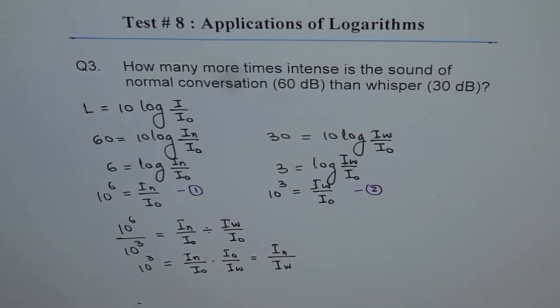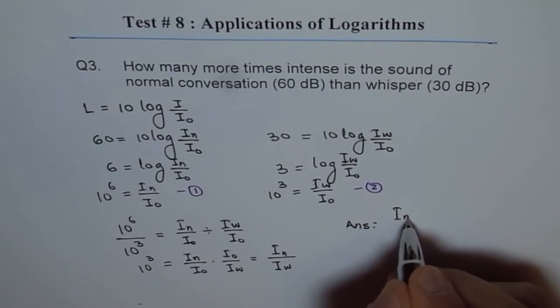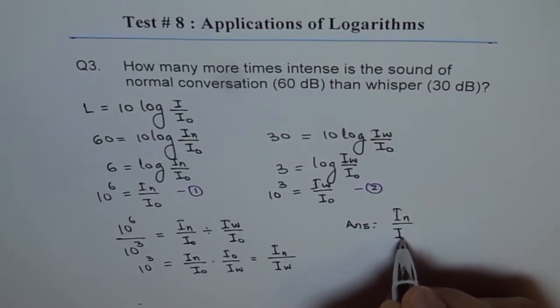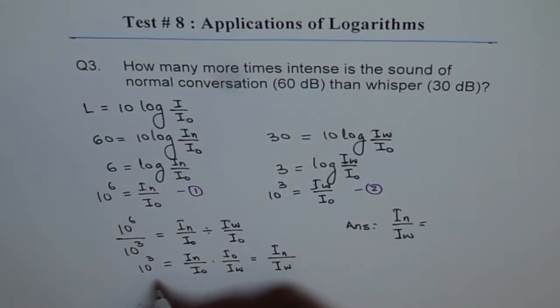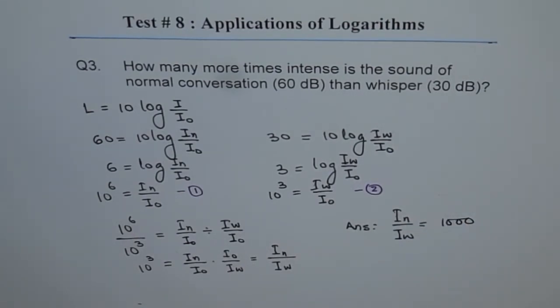So the ratio is 1000 times. And that's how we get our answer. The ratio of intensity of normal over intensity of whisper is 10 to the power of 3, which is 1000. So it is 1000 times.